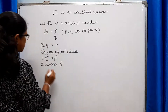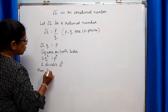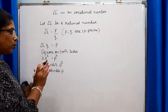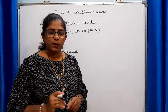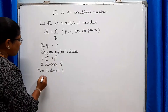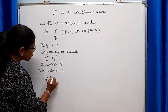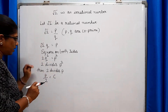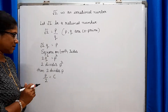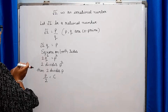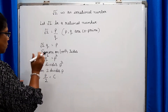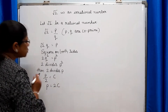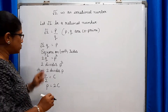If 2 divides P², then 2 also divides P. Now if P is divisible by 2, there exists some quotient. So let P divided by 2 equal C, then P is equal to 2C.